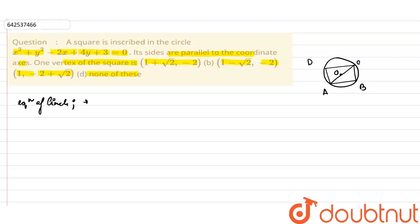When we separate this equation, the equation of the circle becomes (x - 1)² + (y + 2)² = 2. From this we can find that the center O is (1, -2). Therefore, the radius is √2.